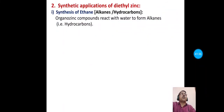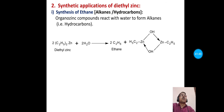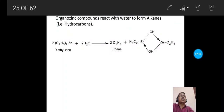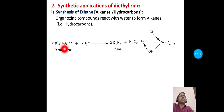The first synthetic application of diethyl zinc is synthesis of ethane (an alkane). Organozinc compounds react with water to form alkanes. Diethyl zinc reacts with water: two hydrogen atoms from two water molecules are taken up by the two C₂H₅ groups to form two molecules of ethane, while the two hydroxyl groups attach to zinc to form a cyclic zinc byproduct.